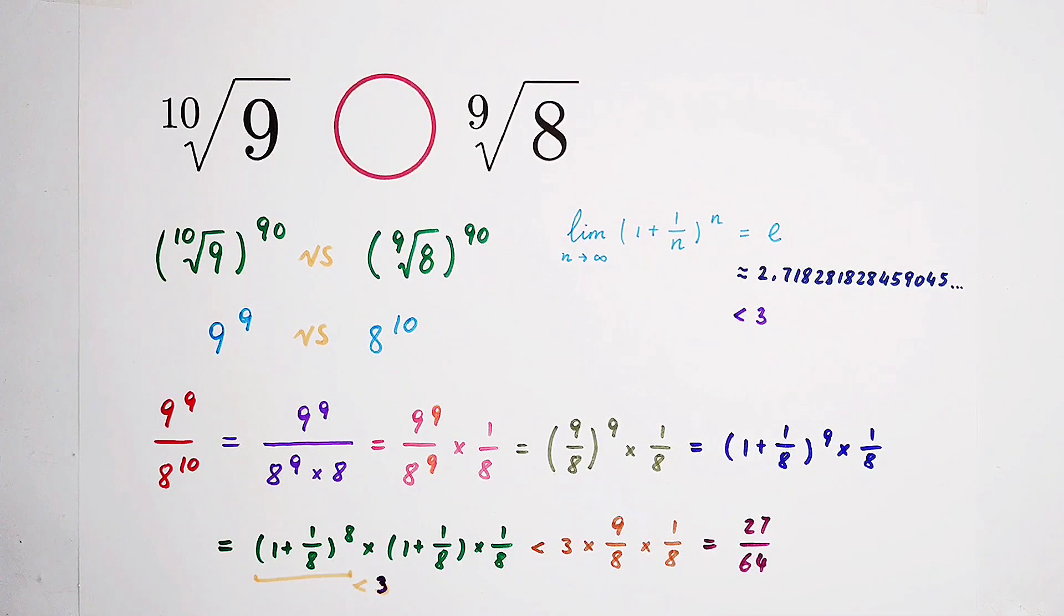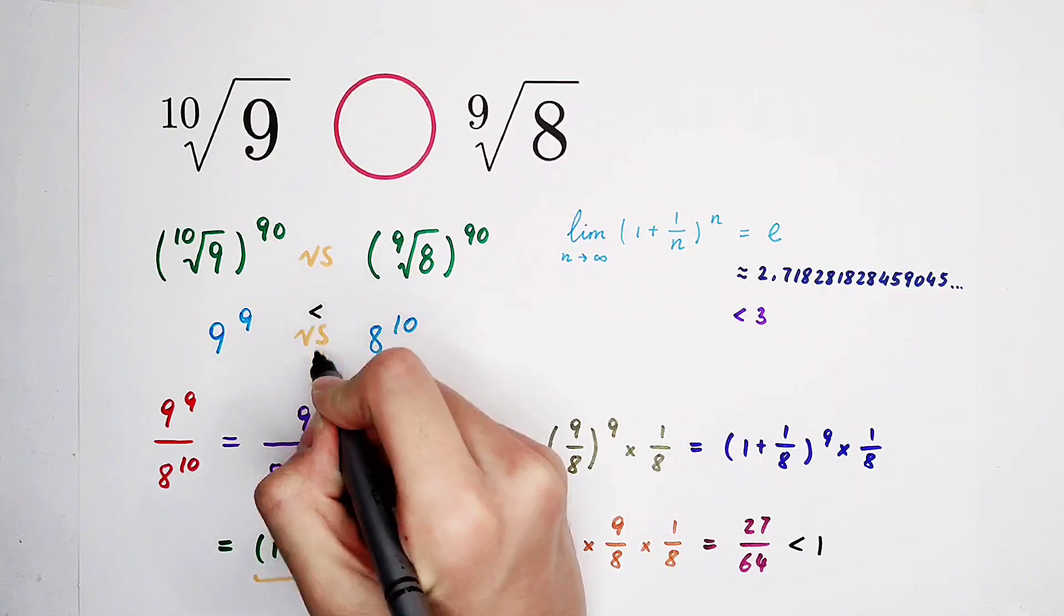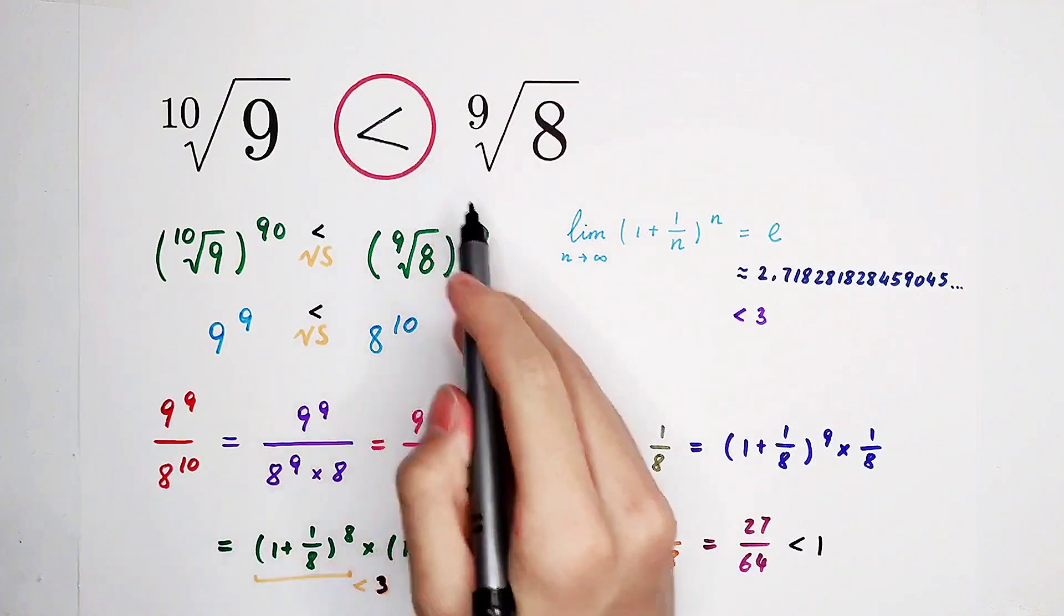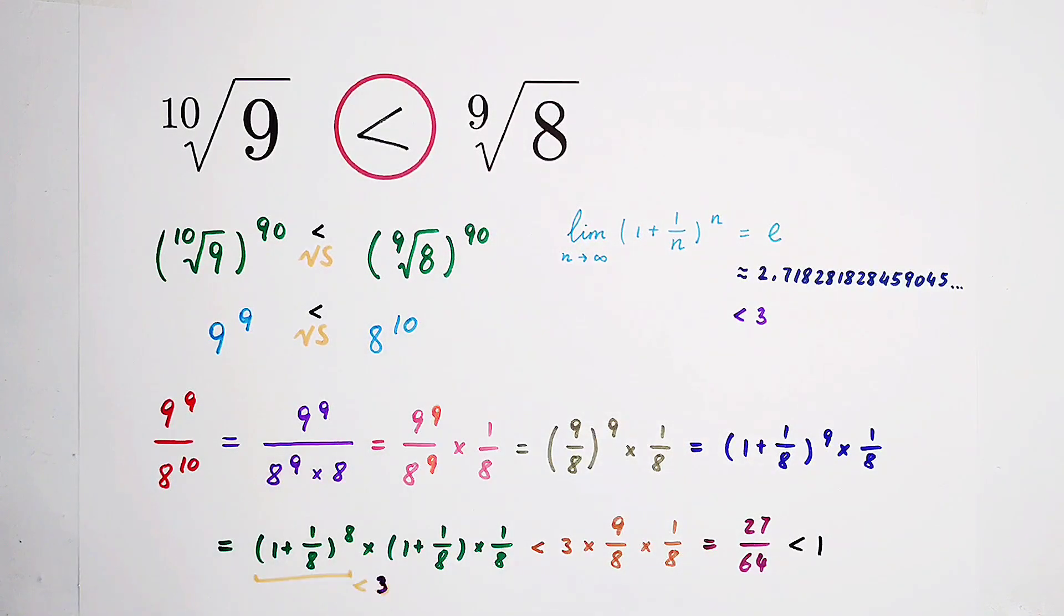And we know that 27 over 64 is smaller than 1. So, what does it mean? It means that 9 to the power of 9 is smaller than 8 to the power of 10. Oh! Greater, greater, in the end... This one is greater!